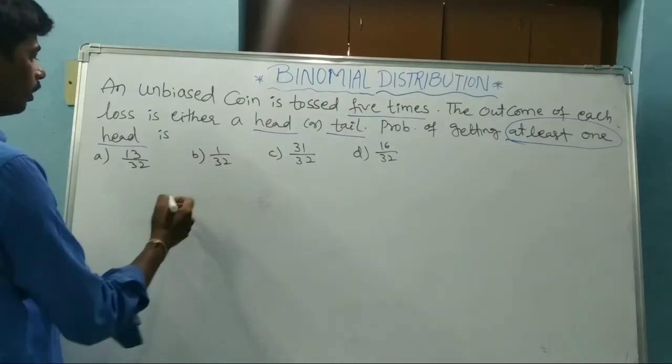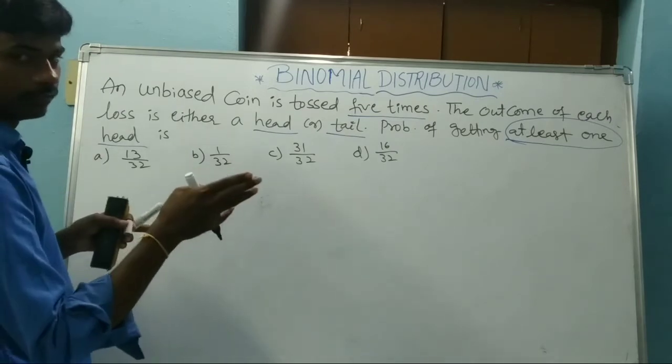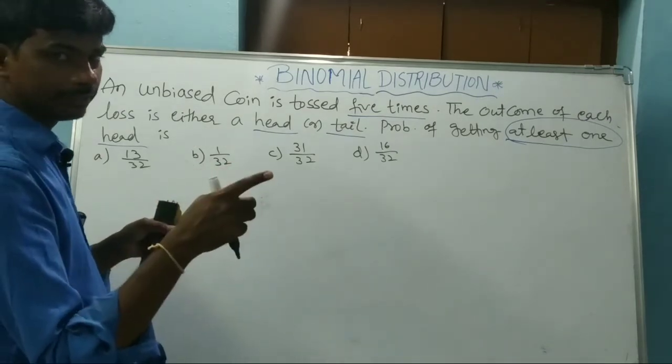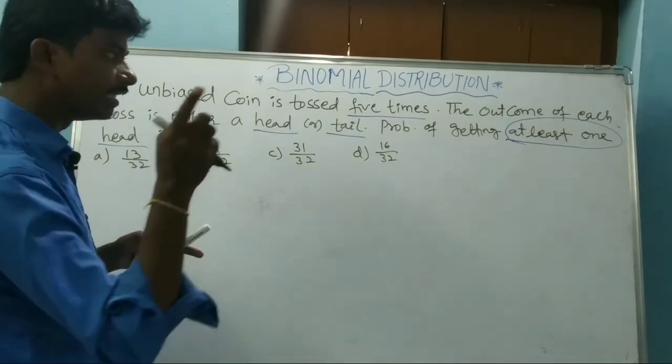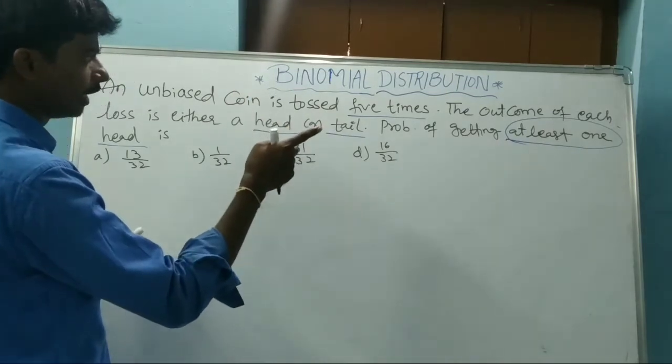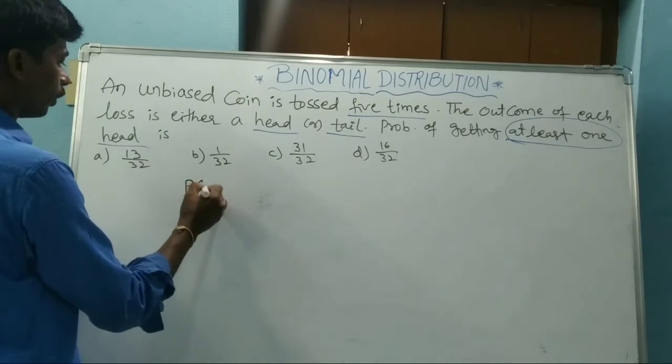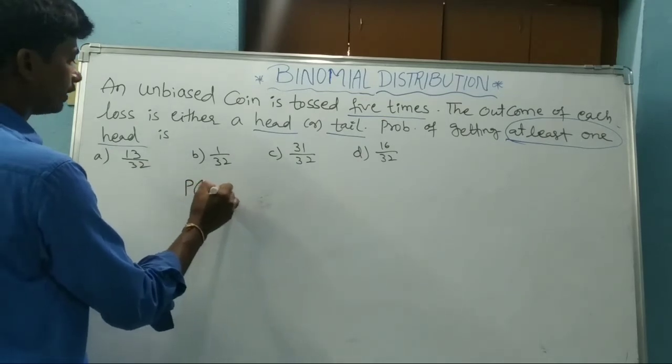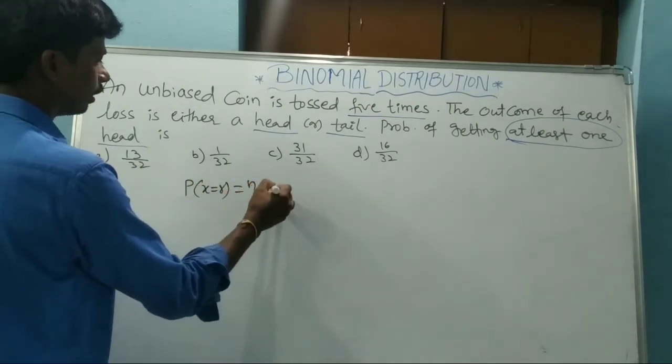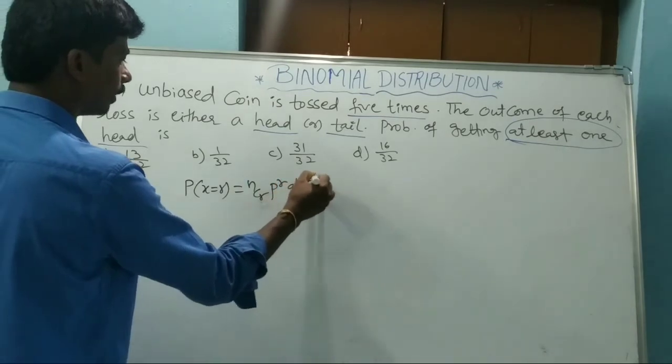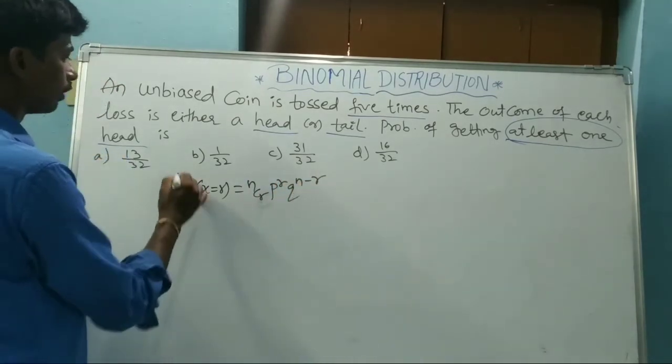Here one coin is tossed. Head chances is one by two, tail chances one by two. Now probability of X equal to R: NCR P to the power R Q to the power N minus R. Using this formula here.